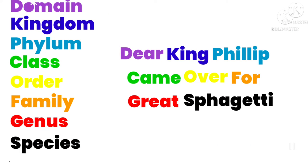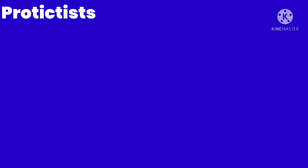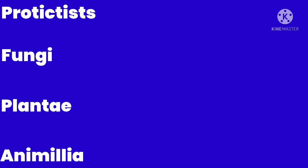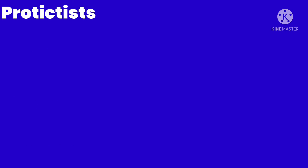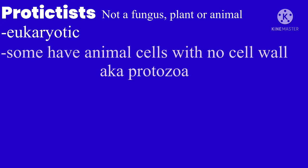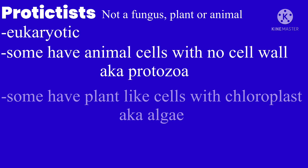Moving on to kingdom. There are four kingdoms: kingdom Protists, kingdom Fungi, kingdom Plantae, and kingdom Animalia. Kingdom Protists are eukaryotes that are not a fungus, plant, or animal. They are eukaryotic and mostly single-celled. Some have animal cells with no cell wall and are sometimes known as protozoa. But some have plant-like cells with cellulose walls and chloroplasts and are sometimes known as algae.